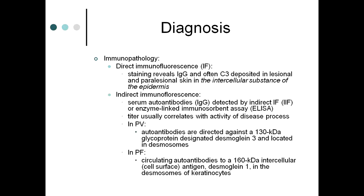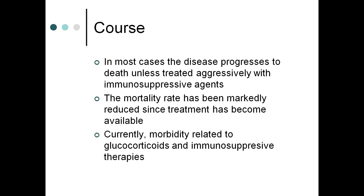Immunopathology: direct immunofluorescence detects IgG and C3 deposited in lesional and perilesional skin in the intercellular substance of the epidermis, showing a characteristic 'fishnet' appearance. Indirect immunofluorescence detects serum IgG autoantibodies (or ELISA) that correlate with disease activity. In pemphigus vulgaris the autoantibody target is a 130 kDa glycoprotein (desmoglein 3); in pemphigus foliaceous it is a 160 kDa antigen (desmoglein 1).